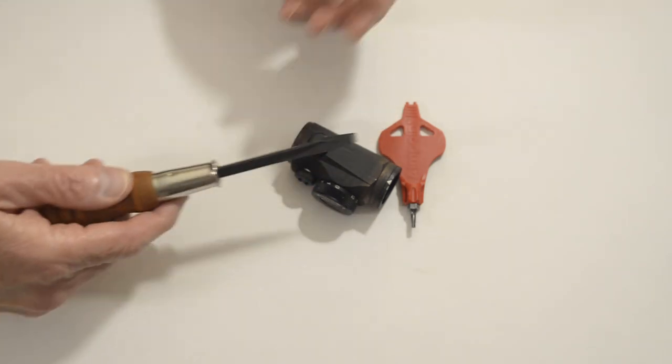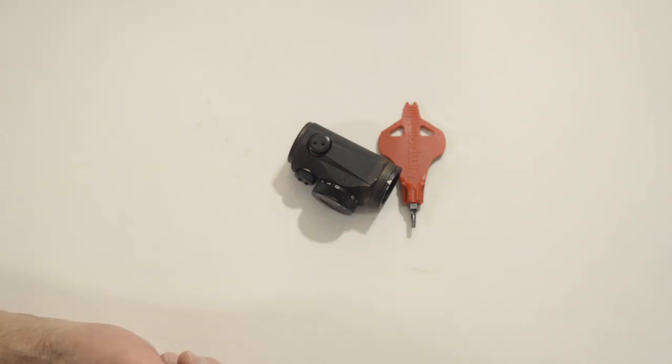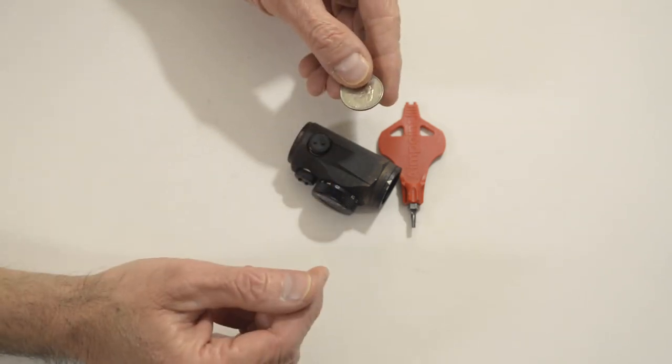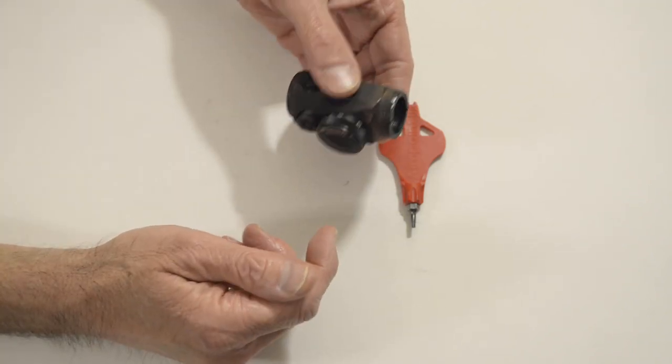Do not use a screwdriver. The screwdriver could end up over-torquing your battery cover. Same thing with a coin. You can over-torque your battery cover and cause the threads to slip and strip, which is what you don't want.